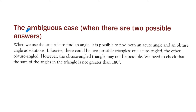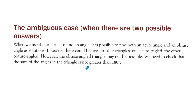The previous example is a great example of the ambiguous case, where there are two possible answers. When we use the sine rule to find an angle, it is possible to find both an acute angle and an obtuse angle as solutions. There could be two possible triangles — one acute angled, the other obtuse angled. However, the obtuse angled triangle may not be possible; we need to check that the sum of the angles is not greater than 180.